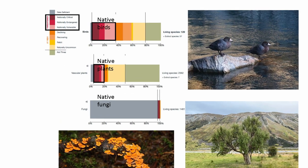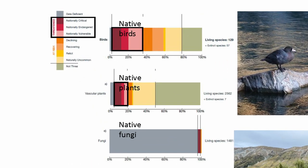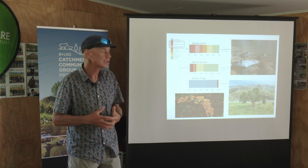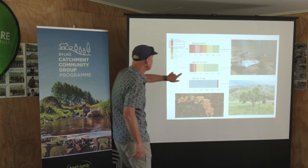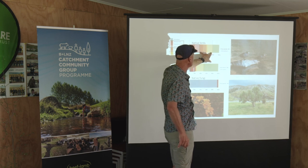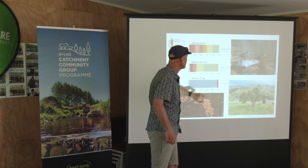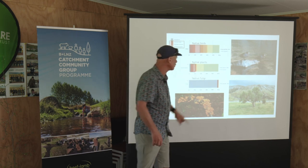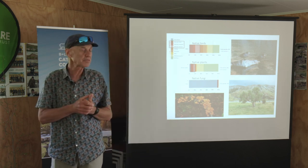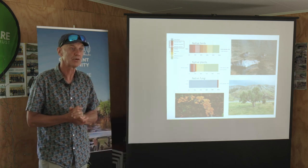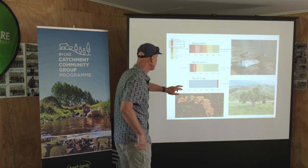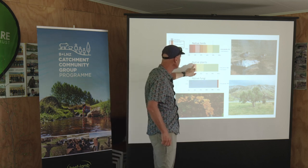For our birds — all 130-odd species — just over a third are genuinely threatened with extinction. Things like whio, the blue duck, are threatened because of predation primarily. Another over a third are either declining or naturally uncommon, and then a smaller group are not threatened. But for our plants, it's only about 20% that are threatened, but there's a large group that are naturally uncommon. They're not necessarily threatened with extinction. Matagouri belongs in that group, manuka belongs in that group — there are a range of things classified in there that are not genuinely threatened.